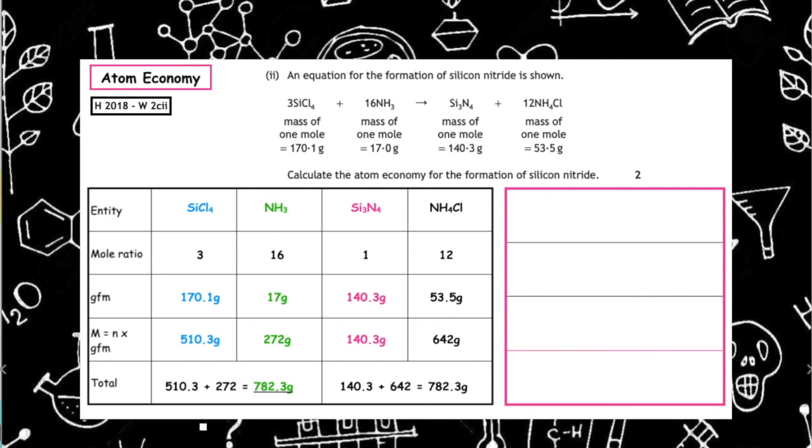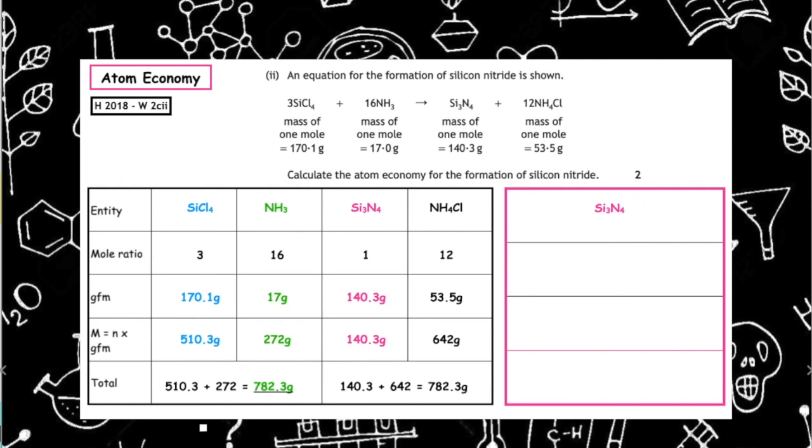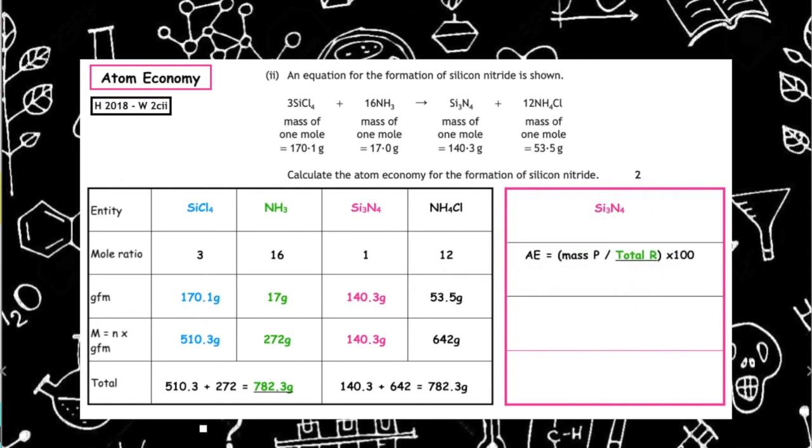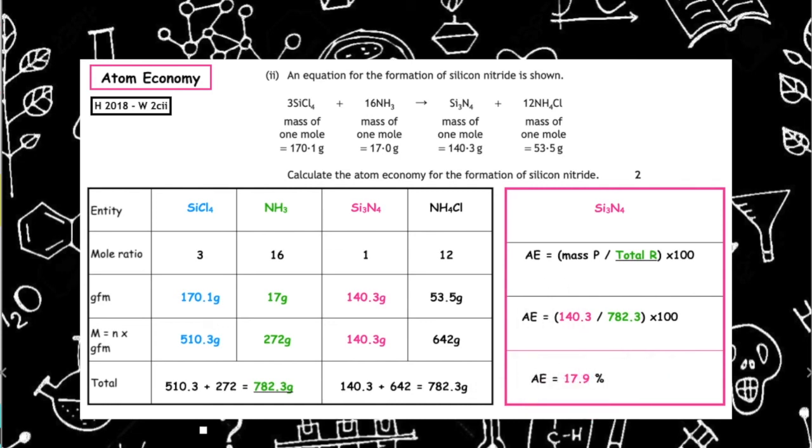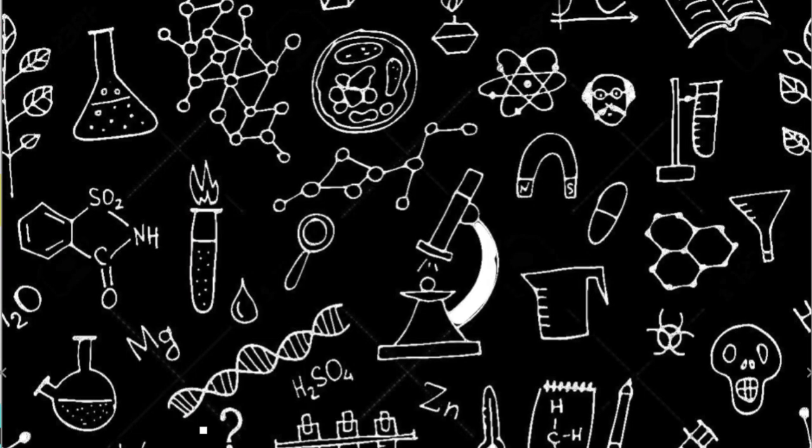We want to calculate the atom economy for the silicon nitride which has the formula Si3N4. We write out our formula: mass of product over total reactants times 100. The mass is 140.3 divided by 782.3 times by 100, and we get an atom economy of 17.9 percent.